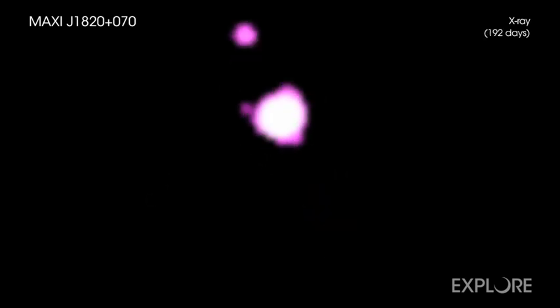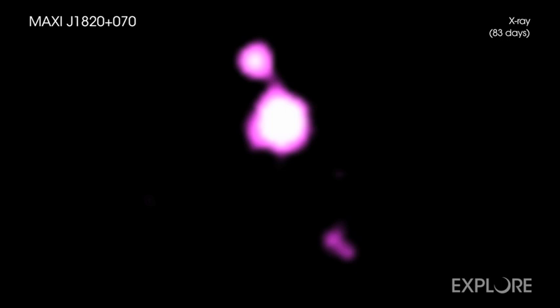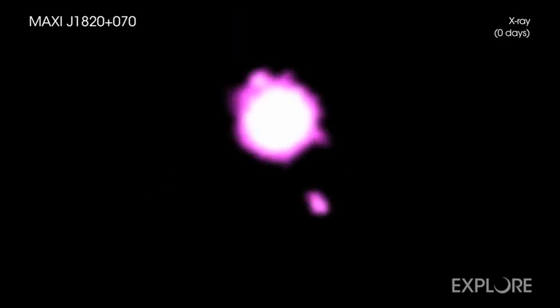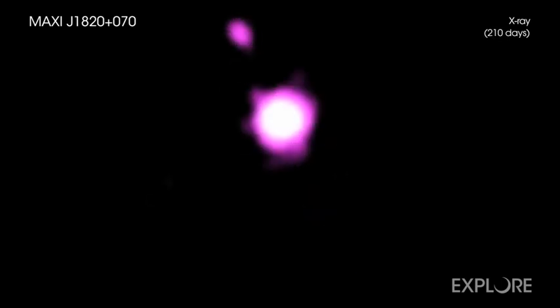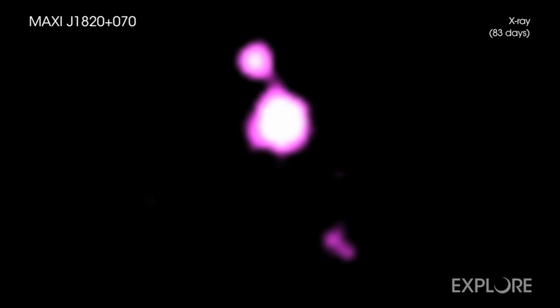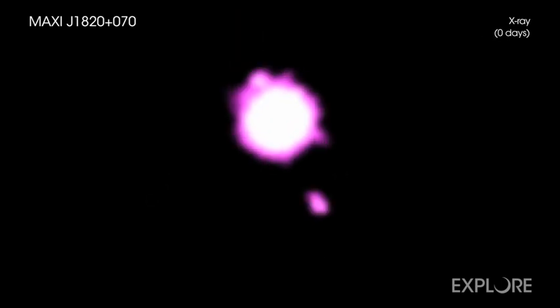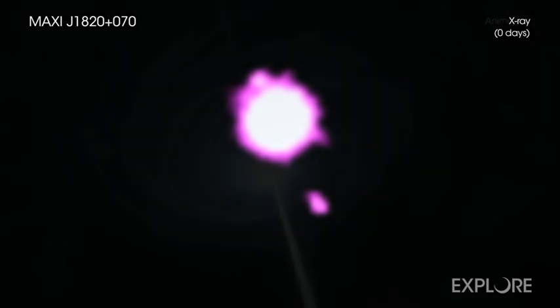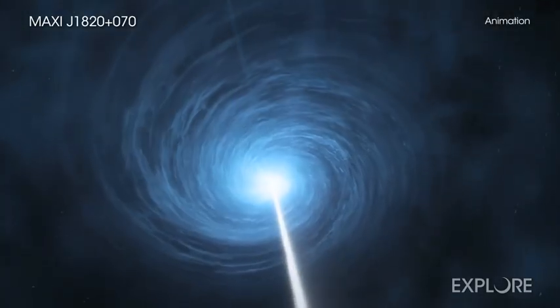Just how fast are the jets of material moving away from the black hole? From Earth's perspective, it looks as if the northern jet is moving at 60% the speed of light, while the southern one is traveling at an impossible-sounding 160% of light speed. This is an example of superluminal motion.